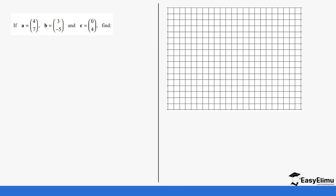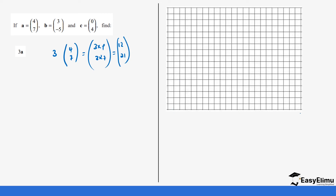Next, we have a = (4, 7), b = (3, -5), c = (0, 4). Find 3a. This is very direct — scalar 3 multiplying (4, 7). That is the same as 3×4 and 3×7, which gives us 12 and 21. So this is going to be a bit large — we are moving 12 steps on the x-axis and 21 steps on the y-axis.